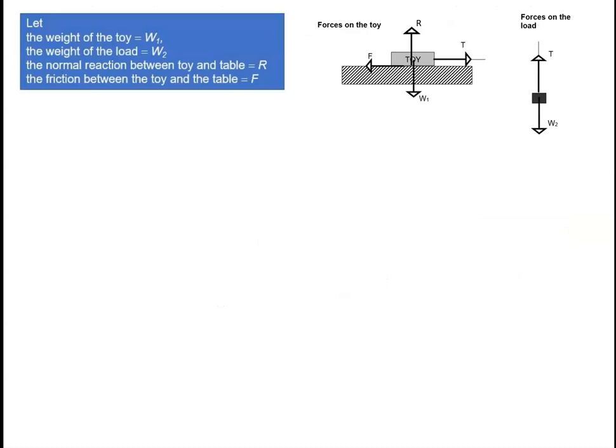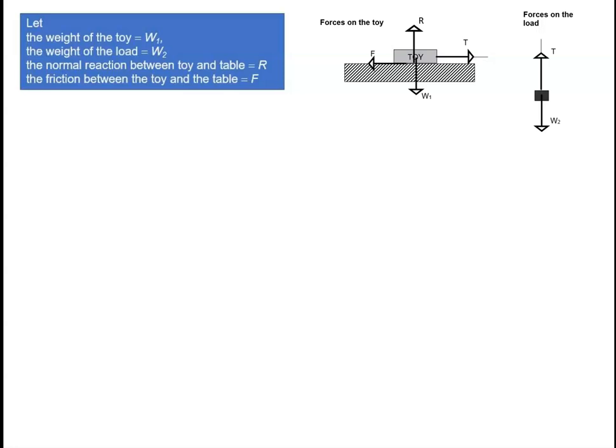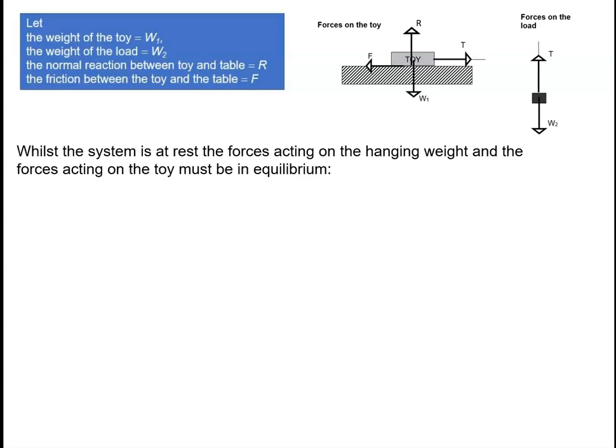Let's set up a few variables. Let W1 be the weight of the toy, W2 be the weight of the load, R be the normal reaction between the toy and the table, and F be the frictional force between the toy and the table. Whilst the system is at rest, the forces acting on the hanging weight and on the toy must be in equilibrium. Considering the load, the total vertical component of forces must equal zero, giving T minus W2 equals zero, so T equals W2.